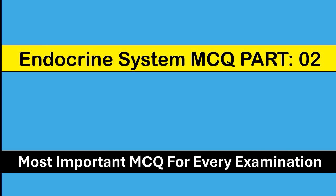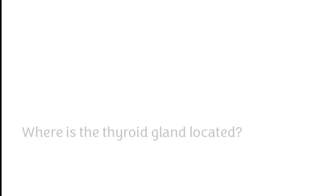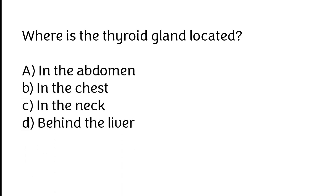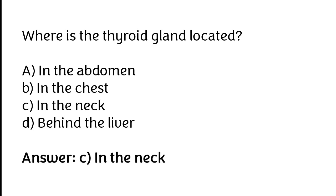Welcome to our channel MCQ One. Today's topic we will cover Endocrine System MCQ Part 2. Where is the thyroid gland located? In the abdomen, in the chest, in the neck, behind the liver. The correct answer is Option C — the thyroid gland is located in the neck.